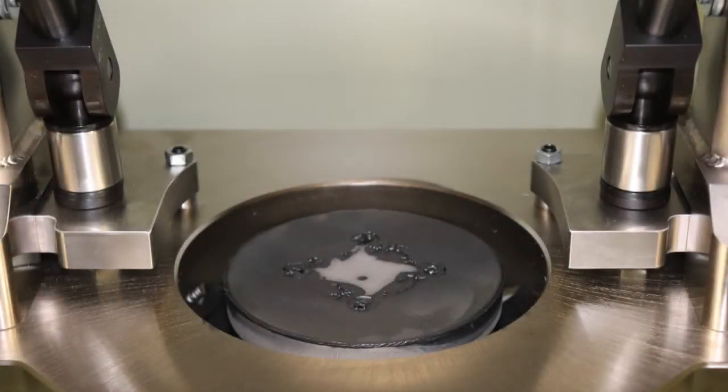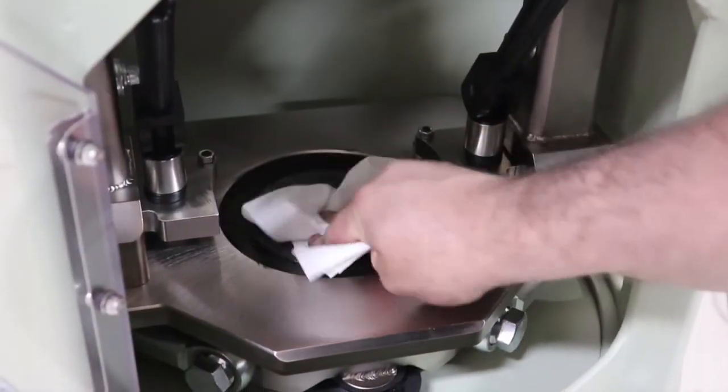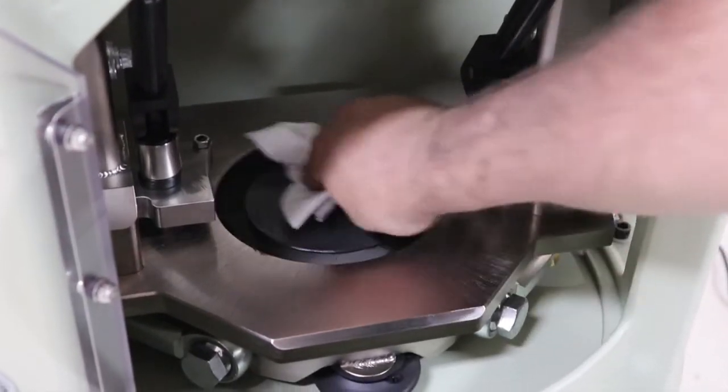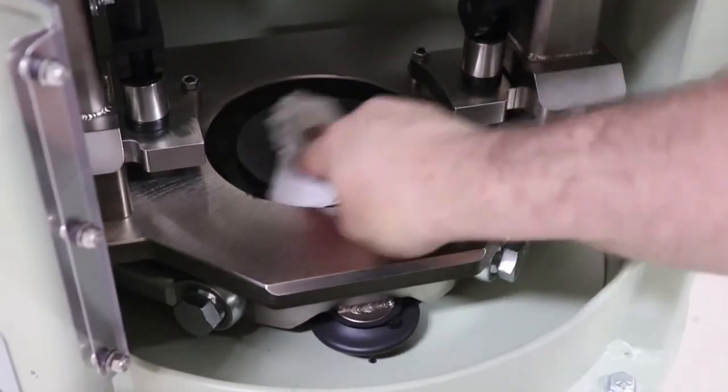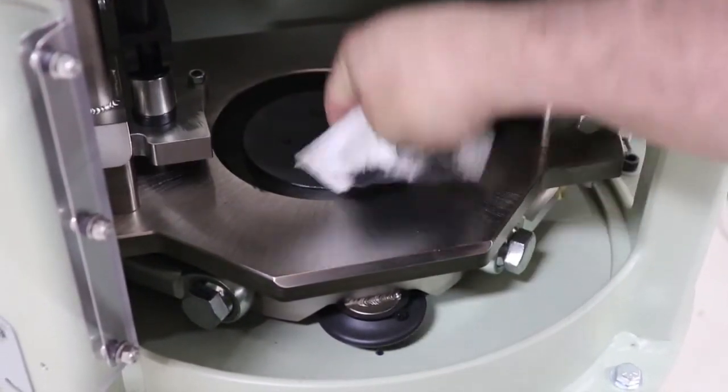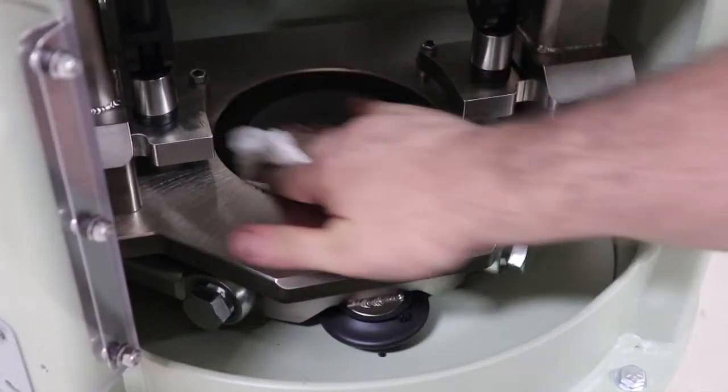Next, you will need to lubricate the ram foot. It is very important that the ram foot is clean before applying a fresh coat of anti-seize. Using rags and a degreasing solution, clean the ram foot. For any stubborn debris, utilize a piece of Scotch-Brite to thoroughly clean and remove any dried anti-seize.